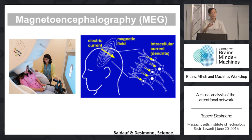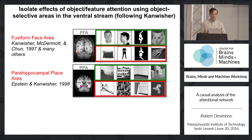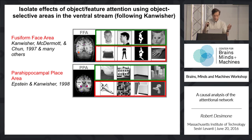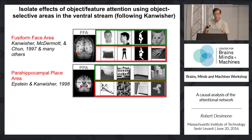For feature object-based attention there's no spatial map per se. Instead, we make use of the known specialization for object processing in the temporal cortex — specifically the fusiform face area and the parahippocampal place area. As originally shown by Nancy Kanwisher and her colleagues, the fusiform face area is preferentially activated by images of faces, and the parahippocampal area preferentially activated by images of scenes including houses. Nancy has used this difference in object feature selectivity in previous fMRI studies showing how attention can modulate processing across these different object modules.